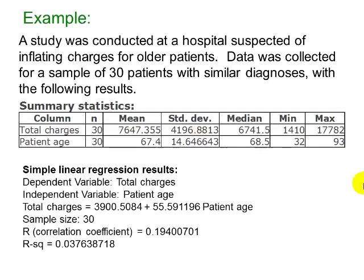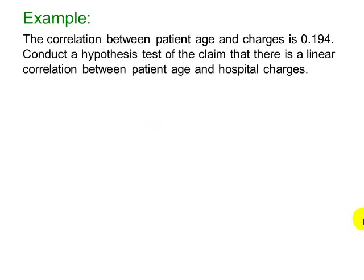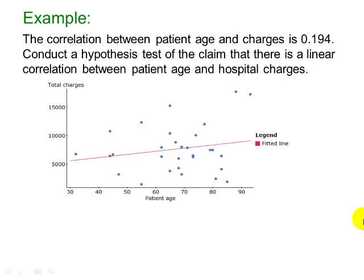Let's look at another example. A study was conducted at a hospital suspected of inflating charges for older patients. Data was collected for a sample of 30 patients with similar diagnoses. We have summary statistics for charges and patient age along with the simple linear regression results. The correlation coefficient comes out to be 0.194. We're going to use that to conduct a hypothesis test of the claim that there's a linear correlation between patient age and hospital charges. StatCrunch also gives us a scatter plot with a regression line drawn in.